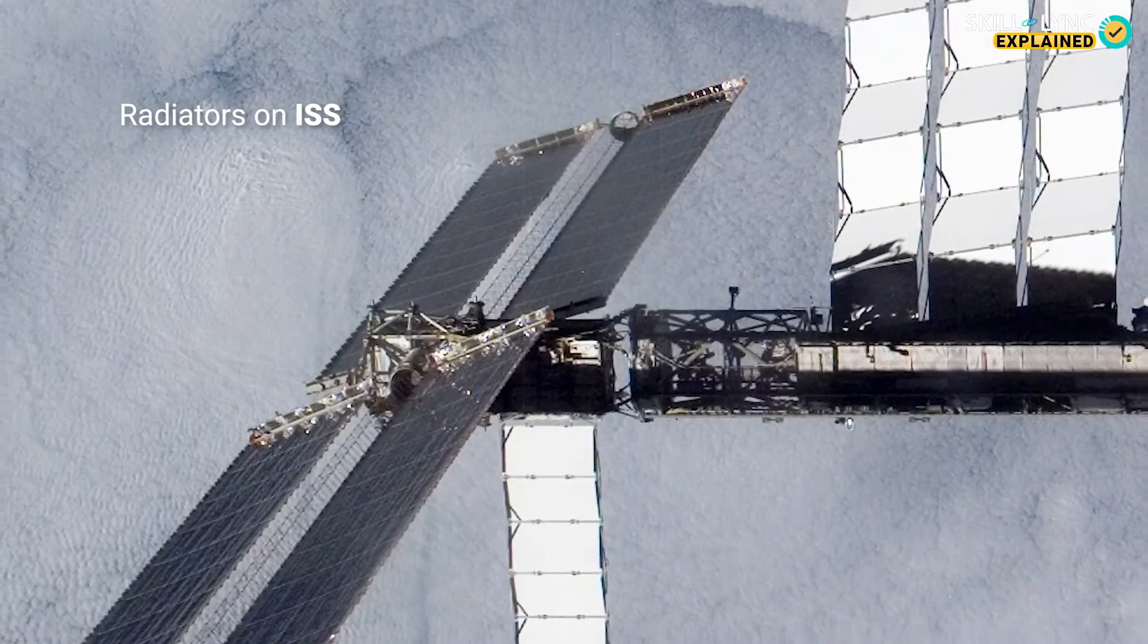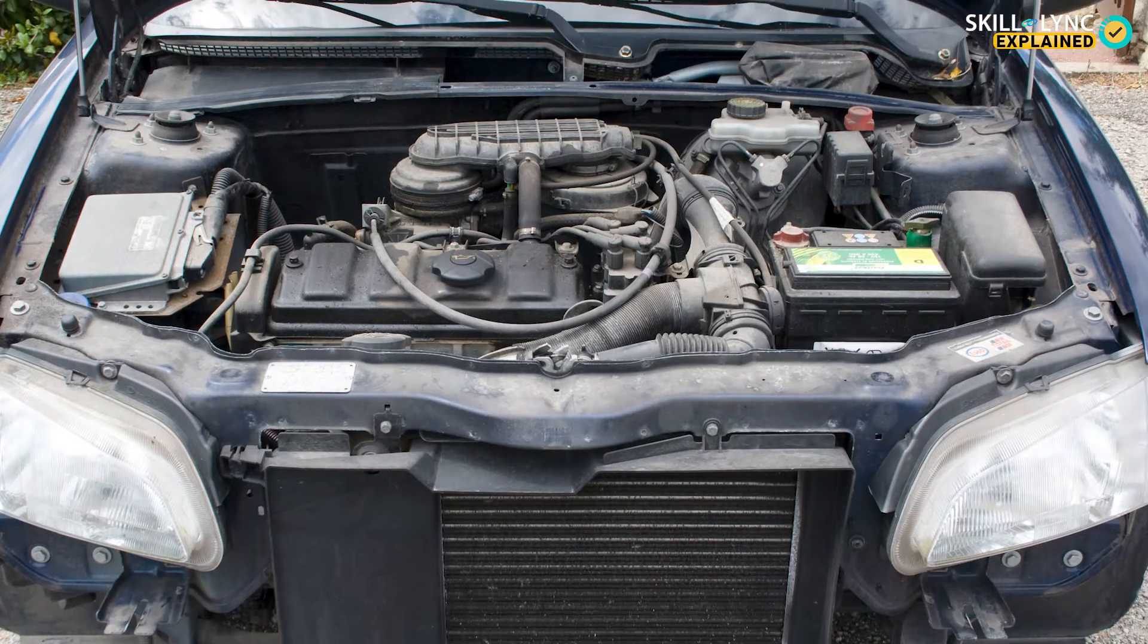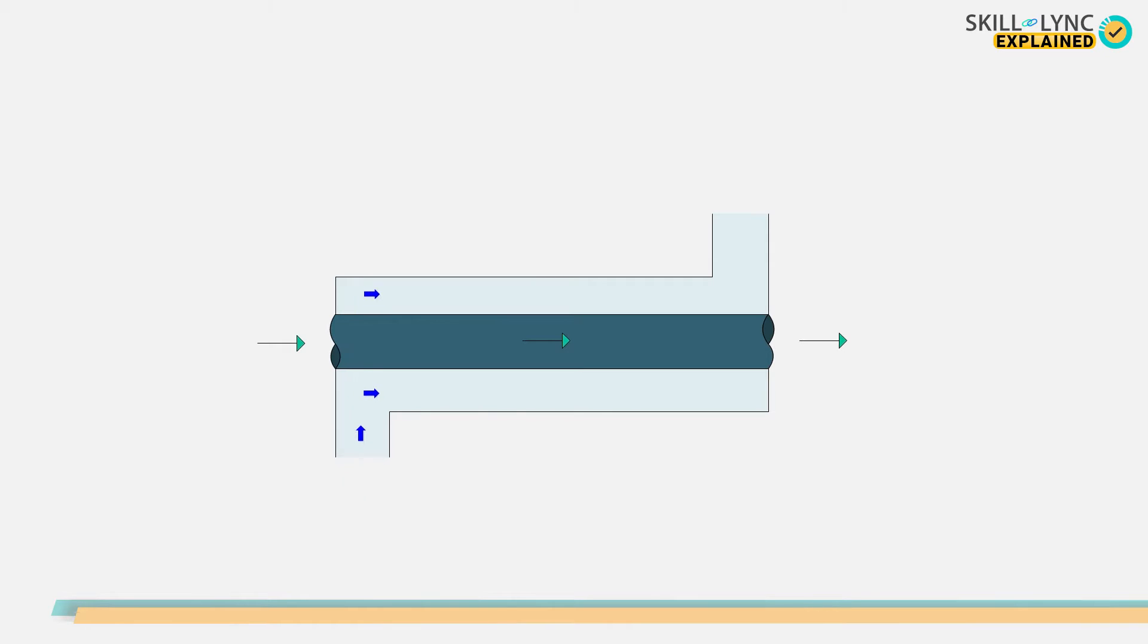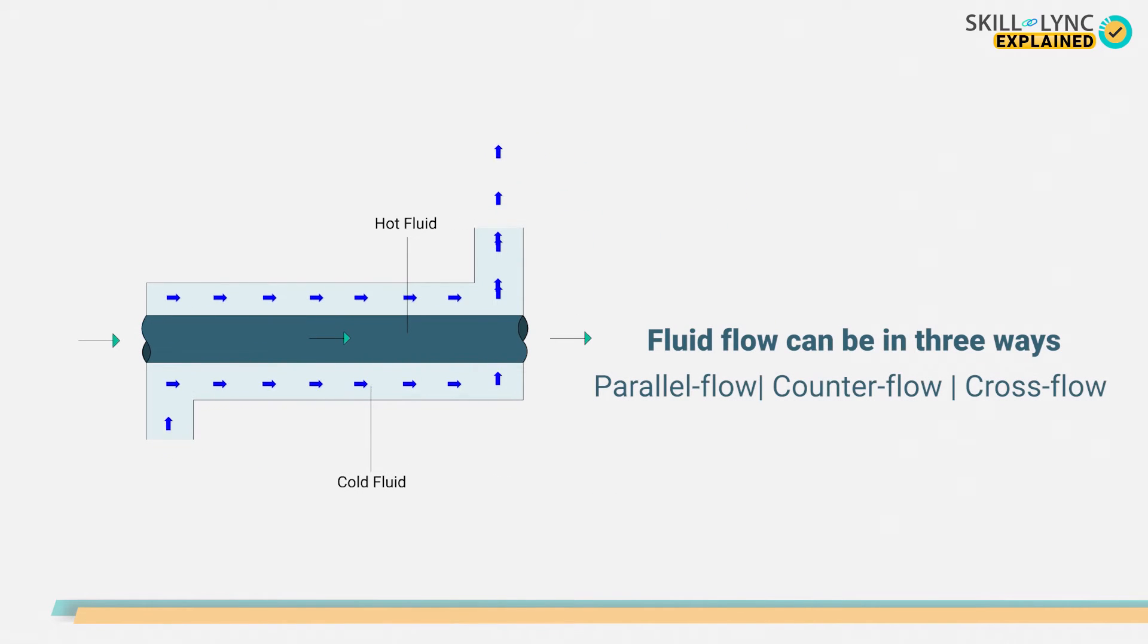A general function of a heat exchanger is to transfer heat from one medium to another. The simplest type of heat exchanger is called a double pipe heat exchanger, which has two concentric tubes. The inner tube has a hot fluid while the outer one has a cold fluid running through it.